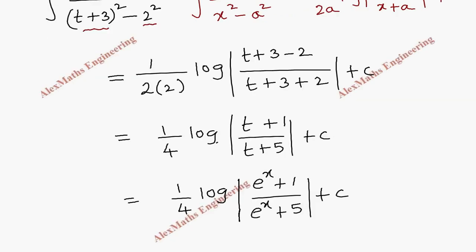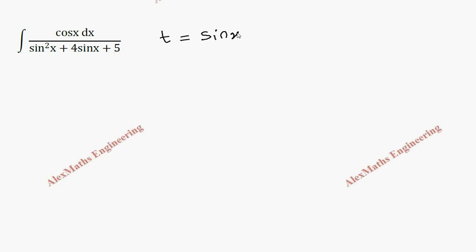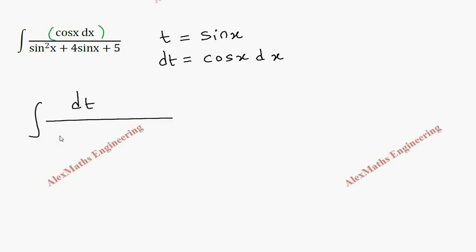Next question: we have integral cos x dx by sin squared x plus 4 sin x plus 5. Here, let's take t equal to sin x. So its differentiation dt is cos x dx. So this numerator can be replaced as dt: integral dt by t squared plus 4t plus 5.